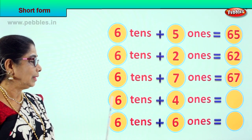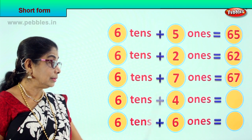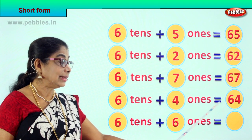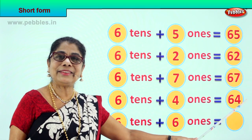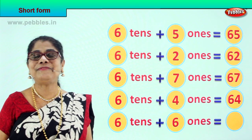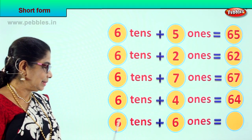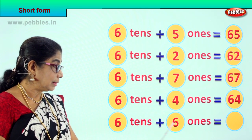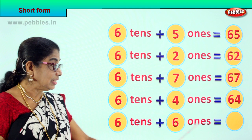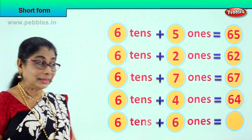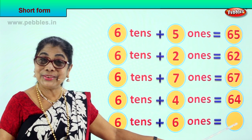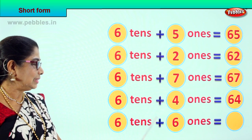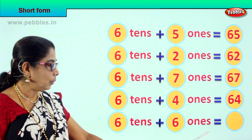Good. 6 tenths plus 6 ones is equal to? 6 tenths plus 6 ones is equal to? 60 plus 4? Good, 64. Very good. 6 tenths plus 6 ones is equal to? 66.